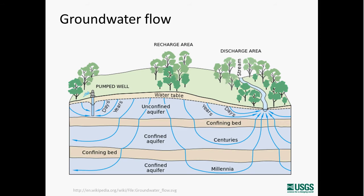Groundwater is usually not stagnant — it's usually moving. It isn't moving fast like a stream, but it is usually moving, and typical flow rates would be on the order of about half a meter per day. It flows away from areas where it enters aquifers to places where water exits aquifers.